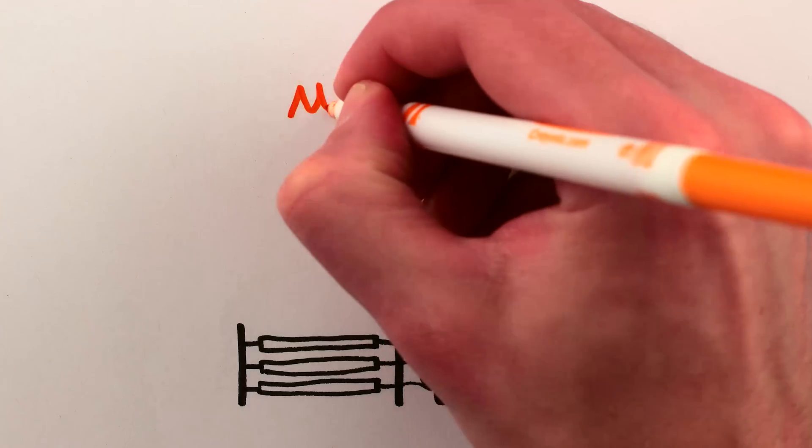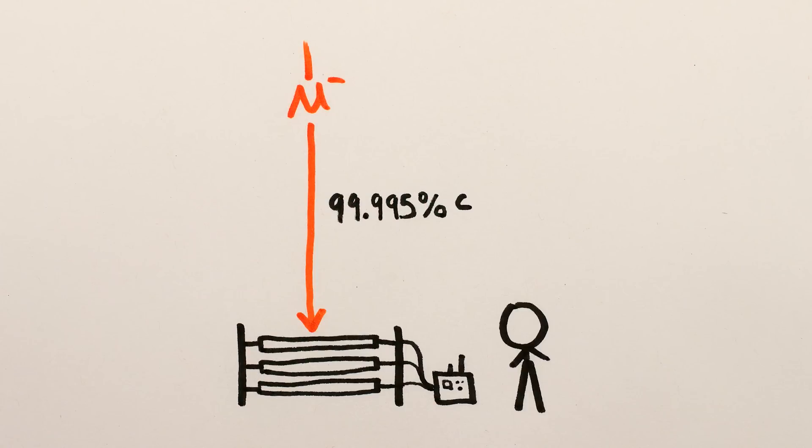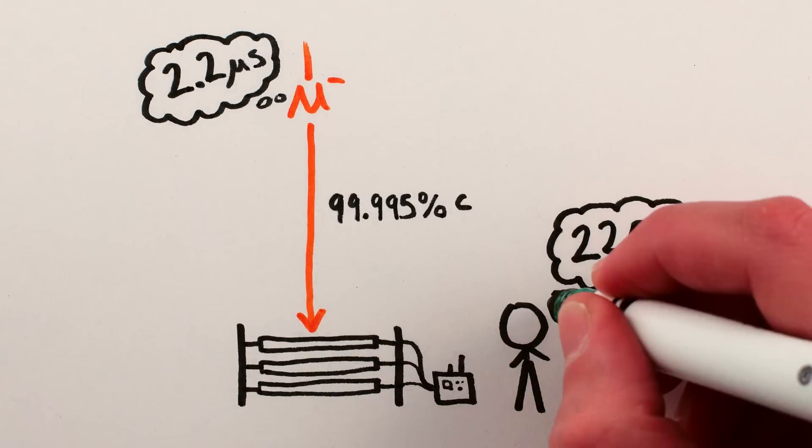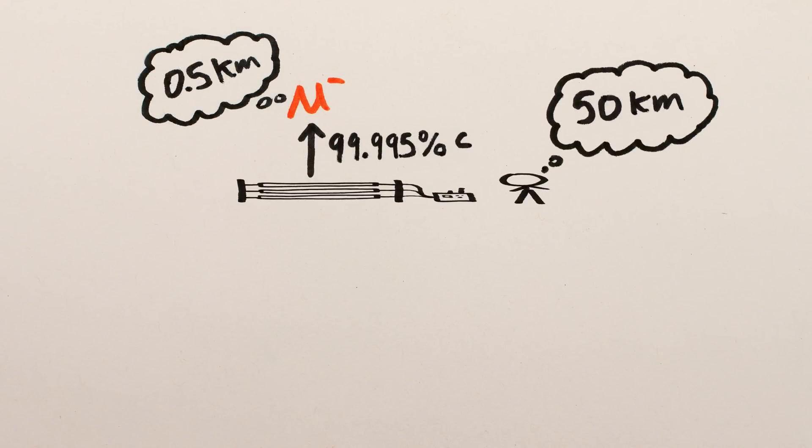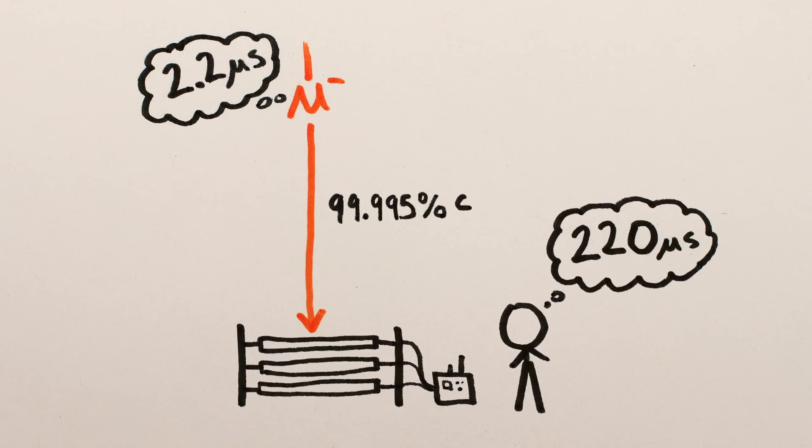This, in my mind, is one of the most awesome experimental verifications of special relativity – the unequivocal time dilation, or length contraction depending on your perspective, for objects moving close to the speed of light. They literally couldn't get here if it weren't for time dilation.